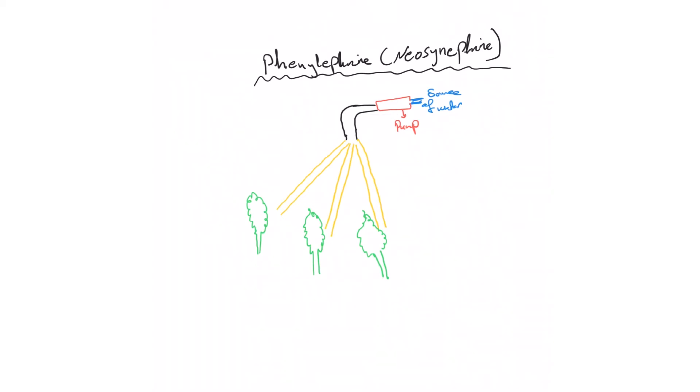Phenylephrine works mainly on the vessels here, causing narrowing of the diameter and vasoconstriction, which increases systemic vascular resistance.